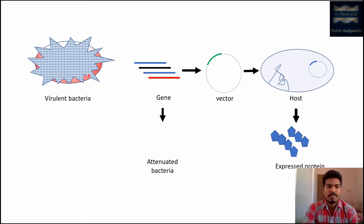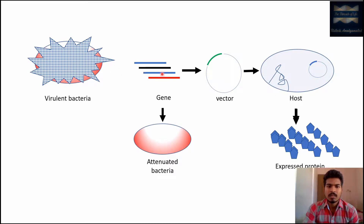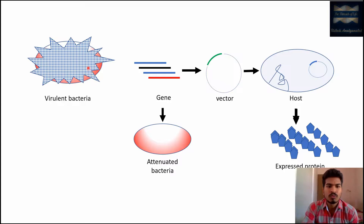The second type is the attenuated recombinant vaccine. Here, we take the same segment of DNA, mutate it, and insert it back into the bacteria. Because we mutated that particular DNA segment, the surface receptor will no longer be expressed on the bacterial surface. This means the virulent bacteria can no longer infect animals or cause infectious disease. We have converted the virulent bacteria into a non-virulent one — that is why it is called an attenuated recombinant vaccine.